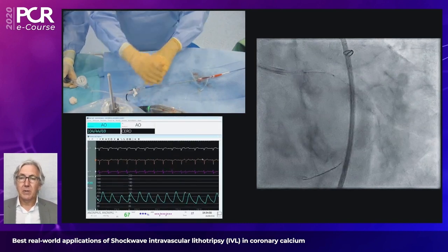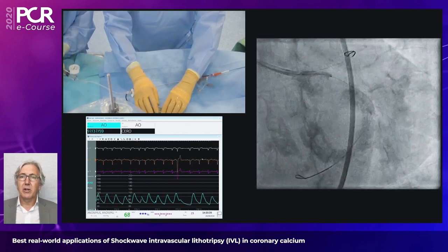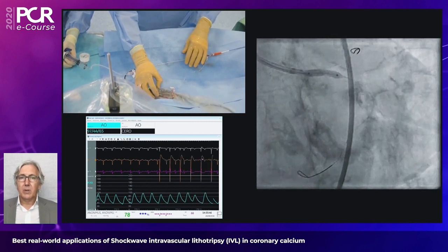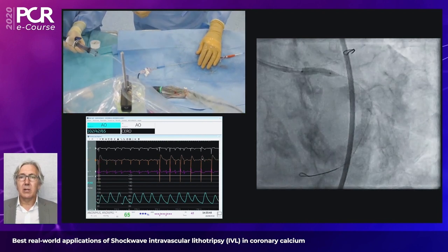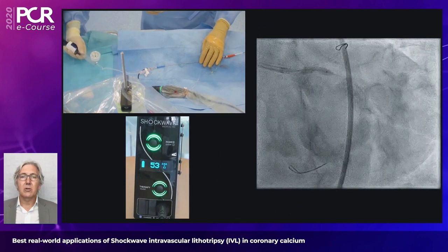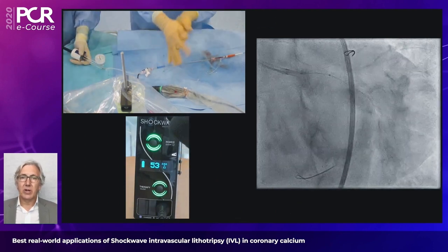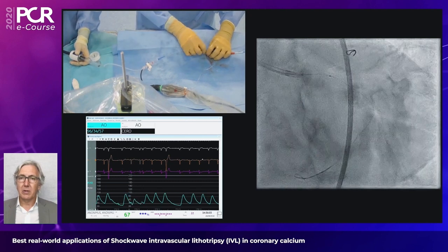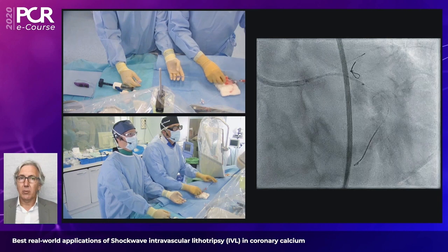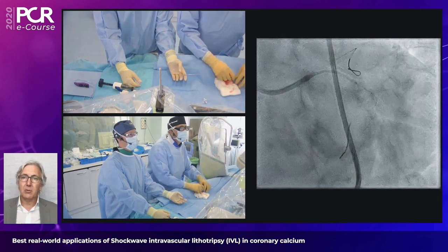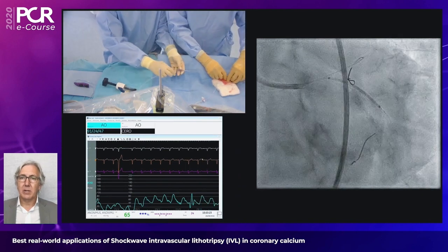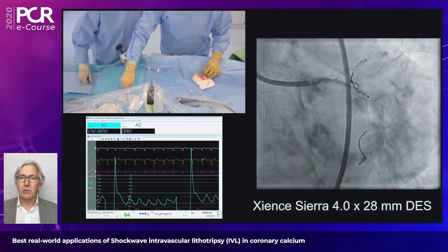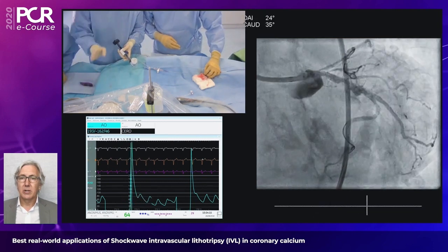After IVL, we optimized the vessel with additional balloon rounds to ensure very good balloon expansion. One of the beauties here is that in many cases you don't need additional dilation — you go directly from the 4 atmospheres used to inflate the IVL balloon and, once expansion confirms proper plaque preparation, you proceed directly to stenting. That's exactly what you see here.